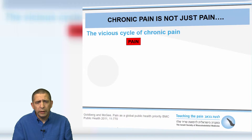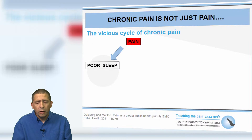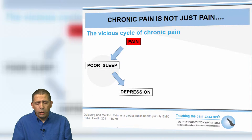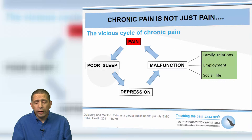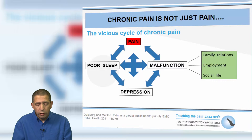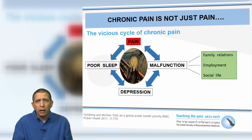Chronic pain is not just pain — it is a vicious cycle. Chronic pain frequently comes with poor sleep. Poor sleep may cause depression, and depression increases the risk of malfunction in family relations, employment and social life. Malfunction aggravates pain, but pain can also directly cause depression. Each factor perpetuates the cycle, which is why chronic pain patients often present with poor sleep, depression and malfunction all together.